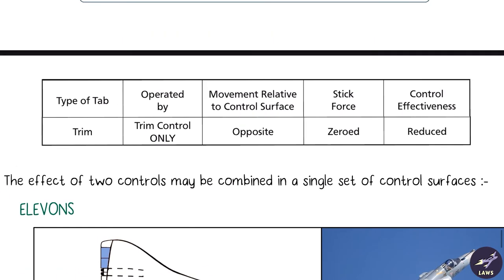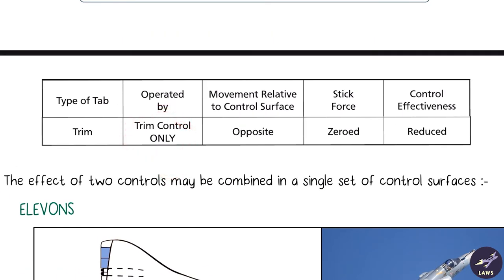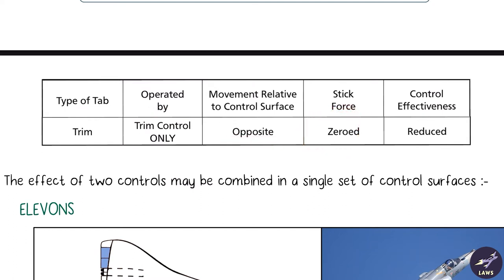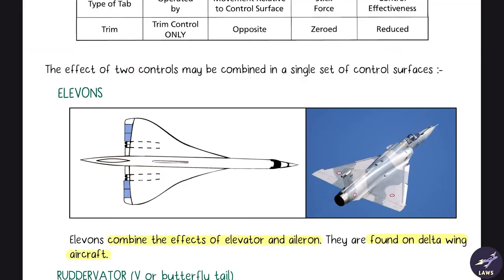To summarize trim tabs: the trim tab is operated by the trim control — the trim wheel or trim switch. The tab movement is opposite to the control surface, stick force is zeroed, and overall control effectiveness is reduced.